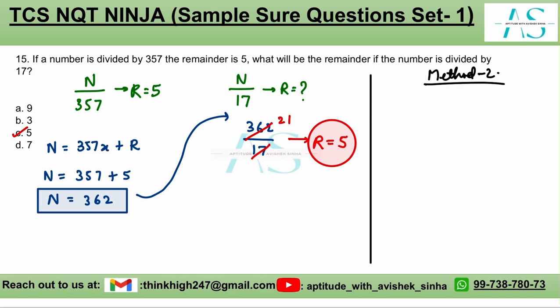First, you divide 357 by 17 and check the remainder. If you do that, 17, 2 times is 34. Then 1 time. Remainder is 0. Upon getting the remainder as 0, the second step is.